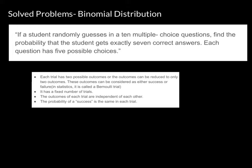We should not stop there because there are other conditions to check. The second condition is a fixed number of trials. Since we are answering only 10 questions, the number of trials — in this case the questions — is 10, which is a fixed number. Condition two is satisfied.